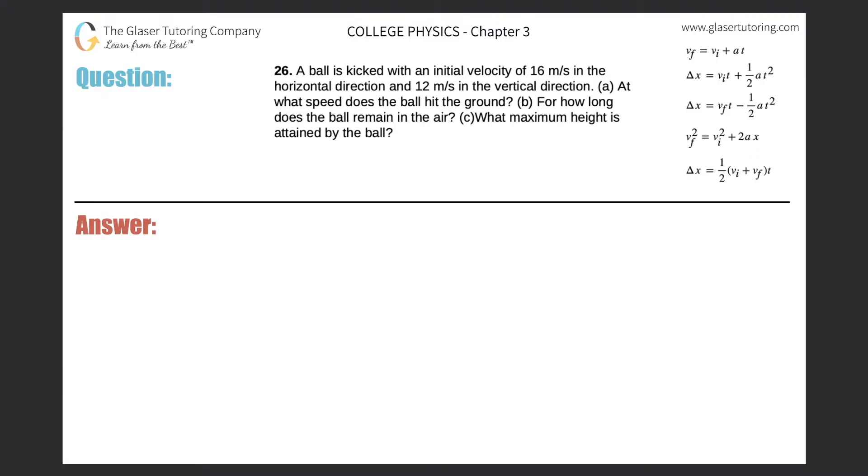Number 26. A ball is kicked with an initial velocity of 16 meters per second in the horizontal direction and 12 meters per second in the vertical direction. At what speed does the ball hit the ground?